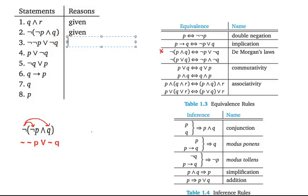And that's exactly what line 3 says. So for line 3 the reason we'll put here is De Morgan's laws and the line that we use to obtain this is line 2. OK, great. Let's move on to line 4.